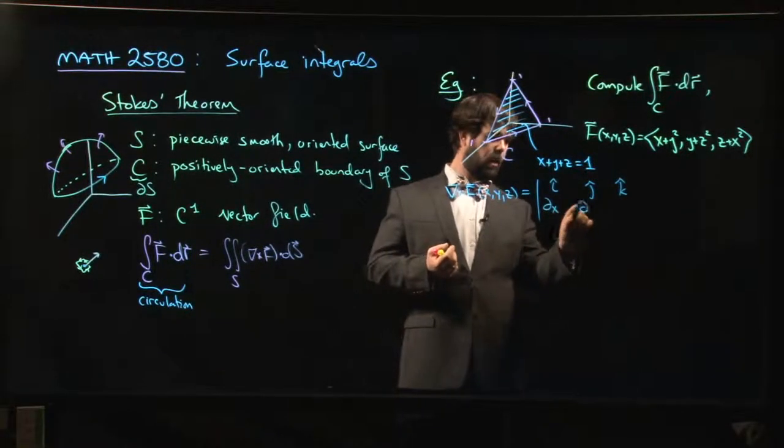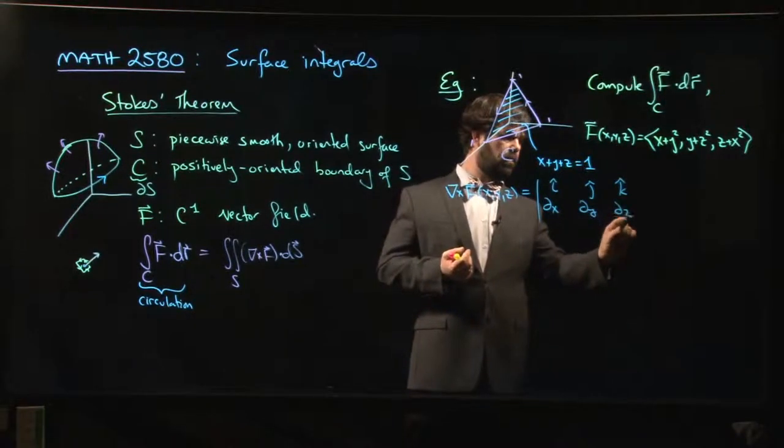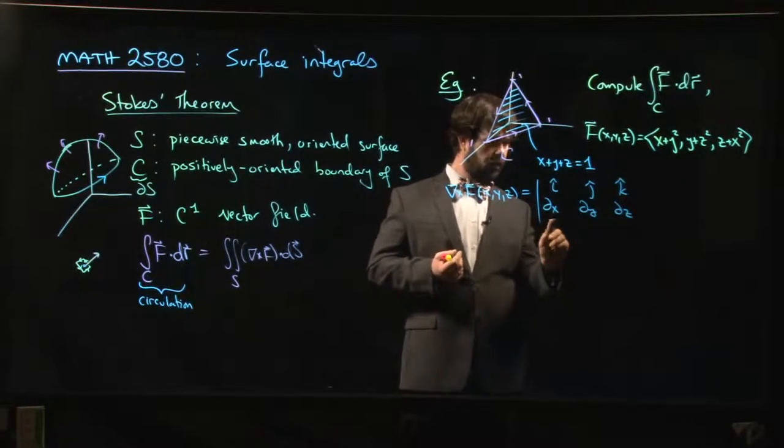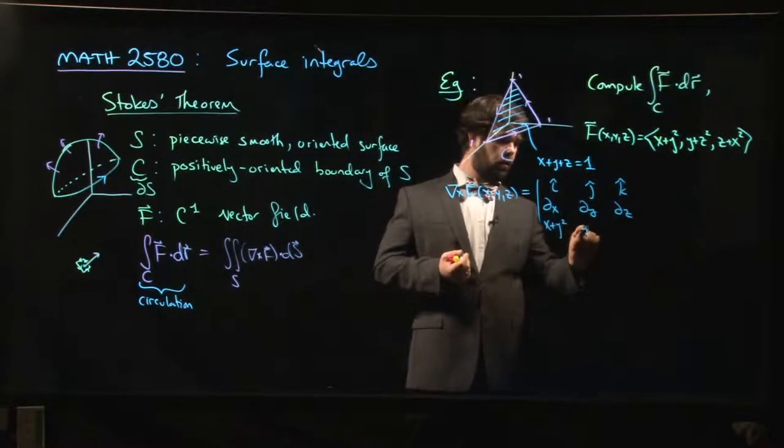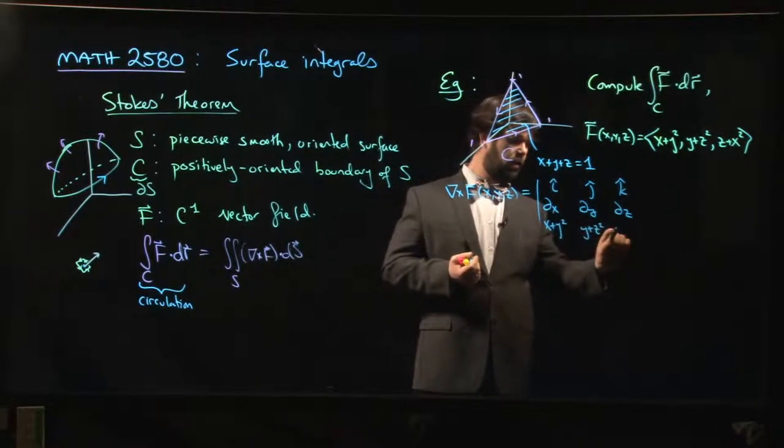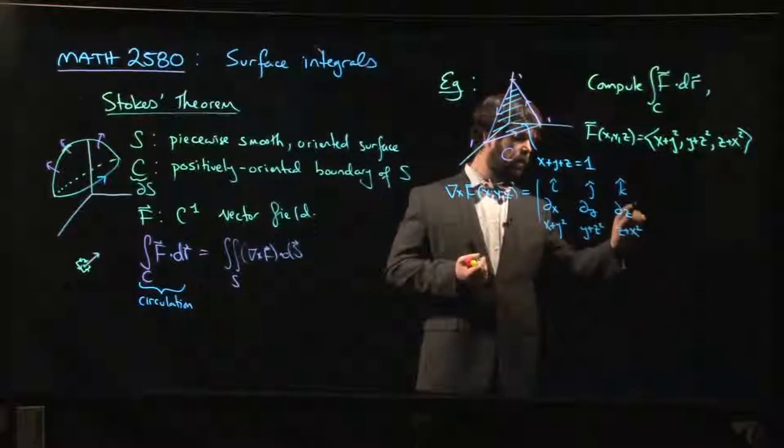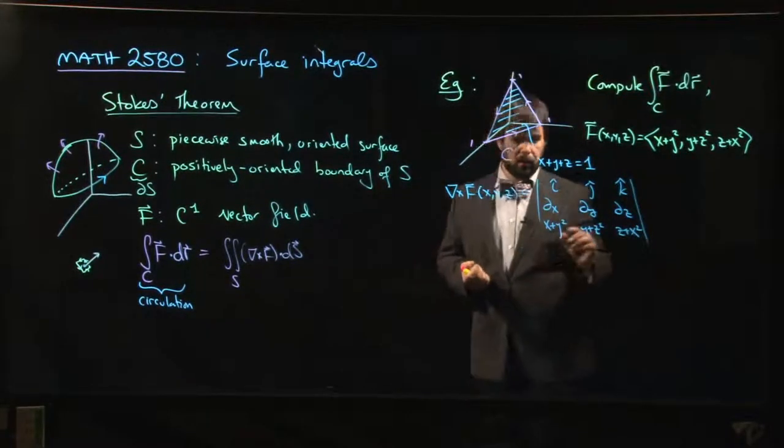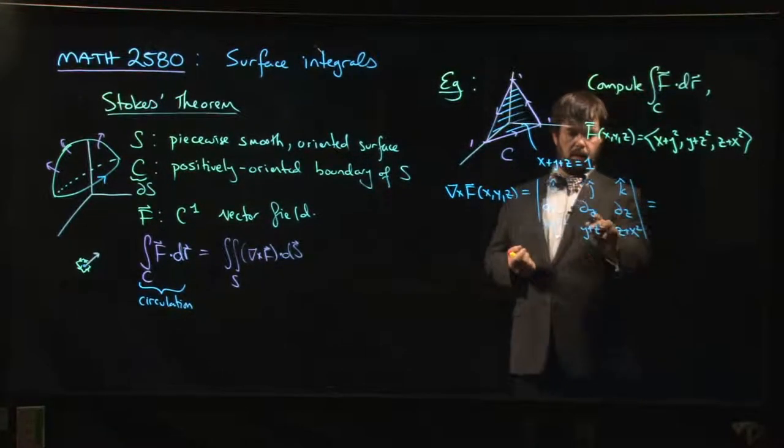So i, j, k; ∂x, ∂y, ∂z; x + y², y + z², z + x². We work out the curl. What do we get?